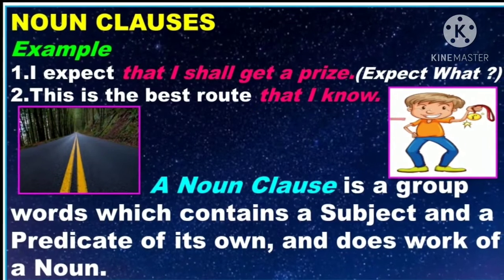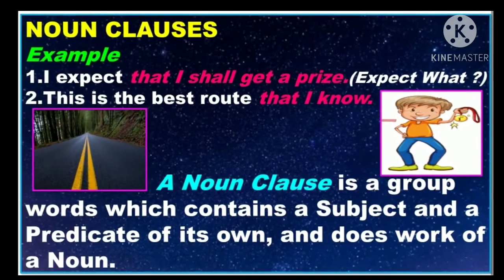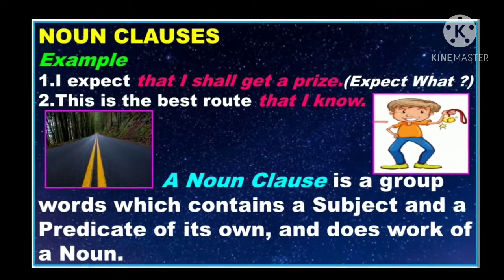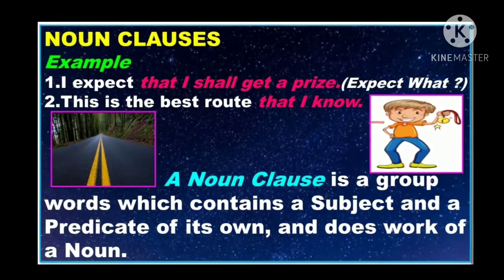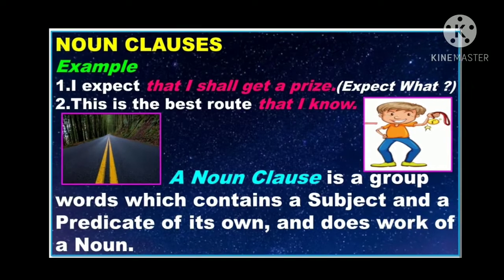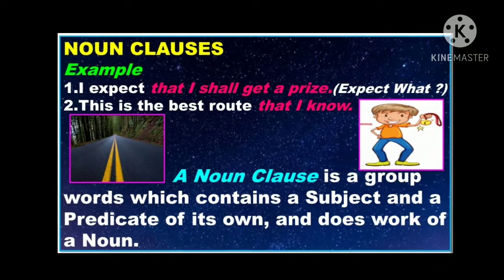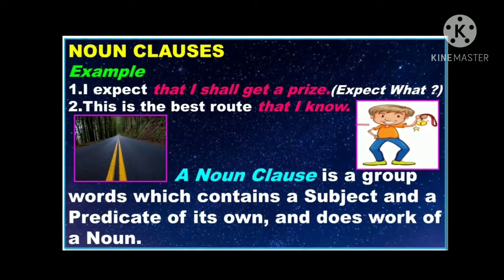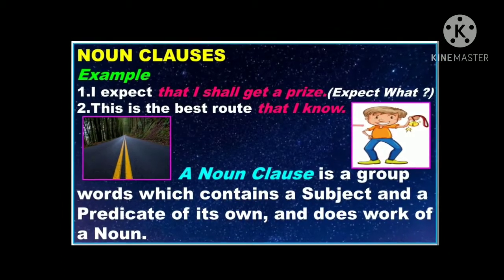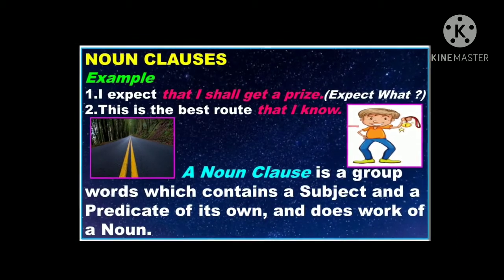The next one is noun clauses. Look at the examples: 'I expect that I shall get a prize.' 'This is the best route that I know.' In these two sentences, the highlighted words are noun clauses. A noun clause takes the place of a noun in the sentence. It is also a group of words which contains a subject and a predicate of its own, and it does the work of a noun.